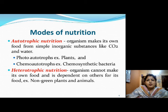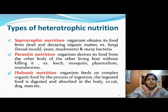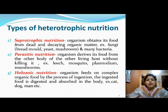Heterotrophic nutrition is one in which an organism cannot make its own food and is dependent on others. Examples are non-green plants and animals. One type is saprotrophic nutrition — as seen in bread molds, that cottony outgrowth on bread caused by fungus. These organisms obtain food from dead and decaying organic matter. More examples of saprotrophic nutrition are yeast, mushroom, and many bacteria.